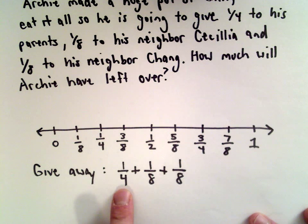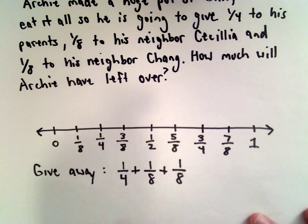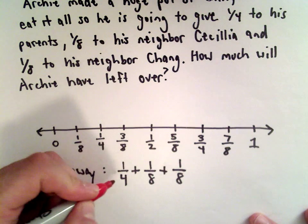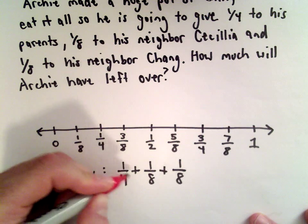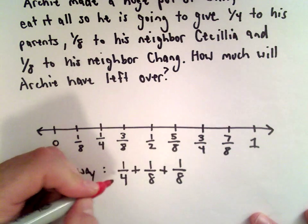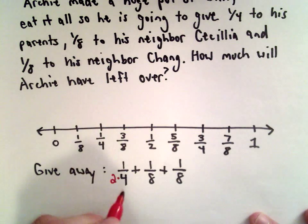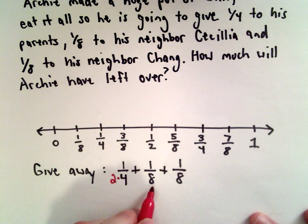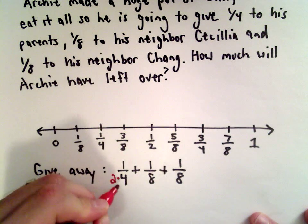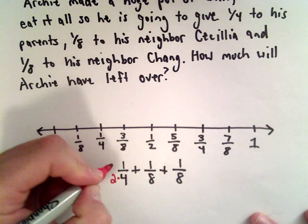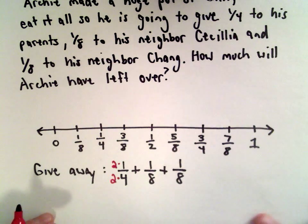Well, it would be nice if the four, instead of a four, I also had an eight, and then I could just do the arithmetic. So to do that, I think, what number could I multiply the number four by so that I get eight? Well, I could multiply four by two to get a denominator of eight. But if I multiply the denominator by two, I also have to multiply the numerator by two.